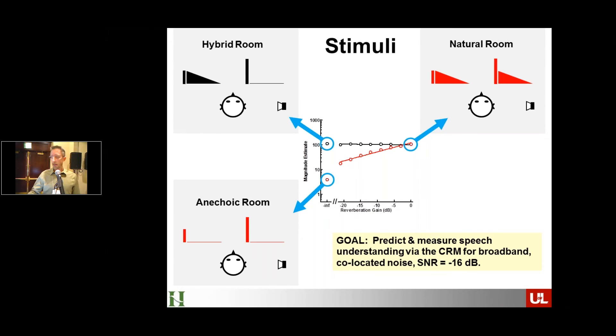And for those of you that are interested, we use a particular type of task for doing this called the coordinate response measure. People are generally very good at understanding speech using that task because it's a closed set of materials. So we have to run with a competing noise source that's in this case, it's co-located with the target. And we have to run at a pretty extreme signal to noise ratio. So fairly low, quite low signal level relative to the noise in order to not be at ceiling in performance.